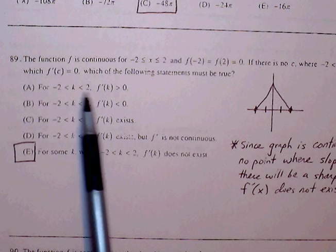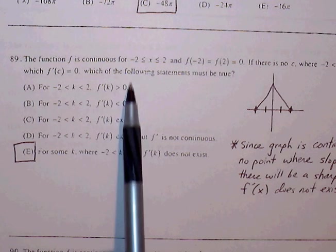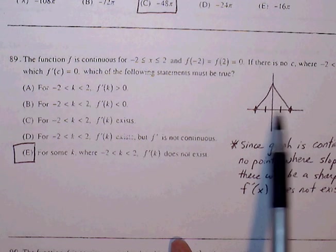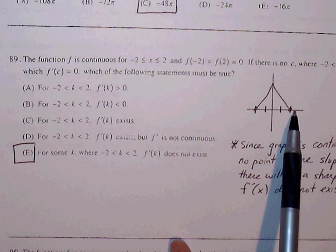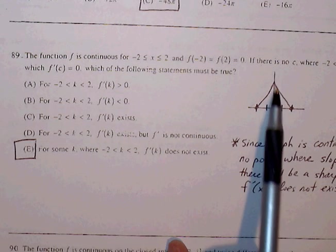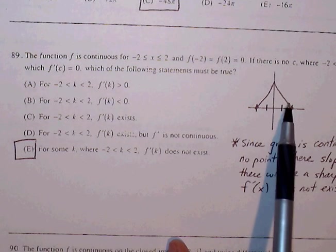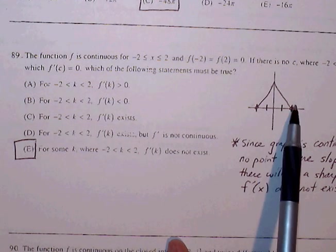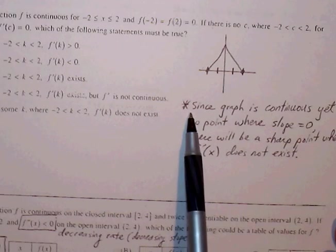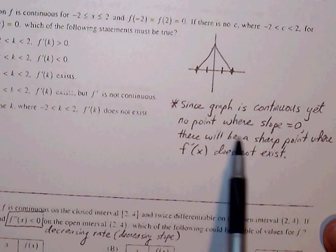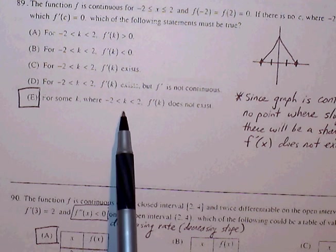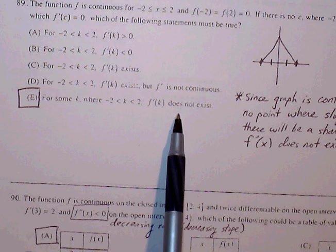So between negative 2 and 2, f' is greater than 0. That's not going to be true because the graph is going to have to go up and come down because we have these two points kind of anchoring the ends of this graph. And there's no point where the slope is 0, so it must be a sharp point, right? There's no point where we can ever have a smooth relative maximum because there's no point where slope is 0. And because our graph is continuous yet no point where slope is 0, then there must be a sharp point where f' does not exist. And so that brings us to part E. For some k value where k is between negative 2 and 2, f' does not exist.